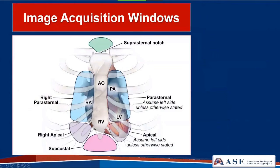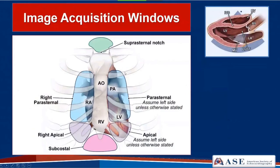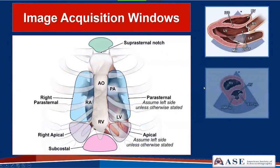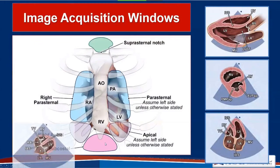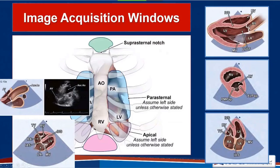We'll next review our image acquisition windows. Starting with the parasternal views, as long as the heart is levocardia with the apex pointed towards the left, we obtain our parasternal long axis and short axis views. The apical window is where we perform our series starting with the apical four-chamber view. The subcostal window starts with the four-chamber view. The right parasternal window is predominantly used in adults to locate the ascending aorta and identify the angle of incidence for placement of the CW Doppler transducer for accurate measurements such as in aortic stenosis. The suprasternal notch view is used for imaging the aortic arch.